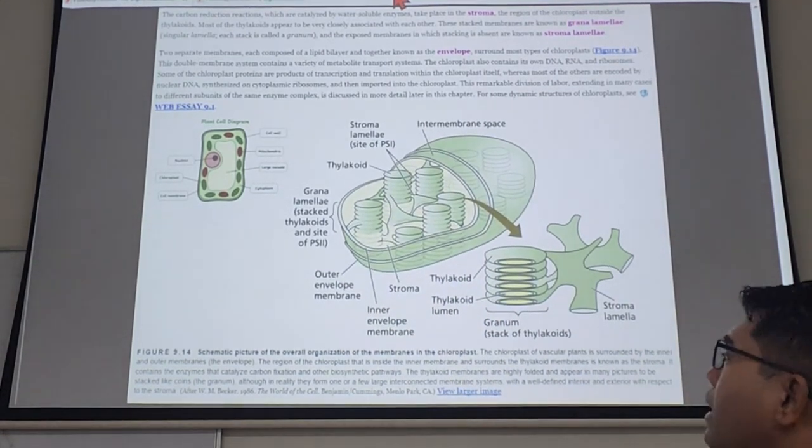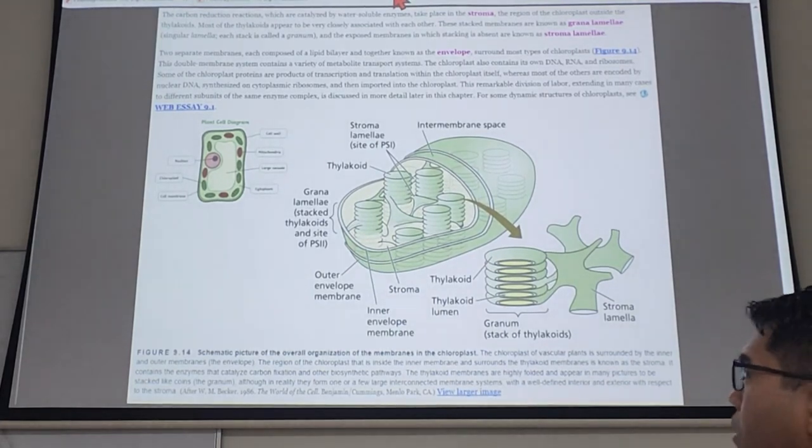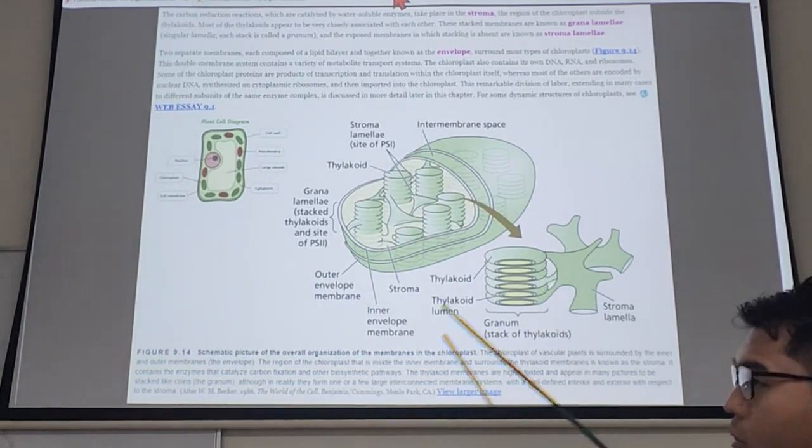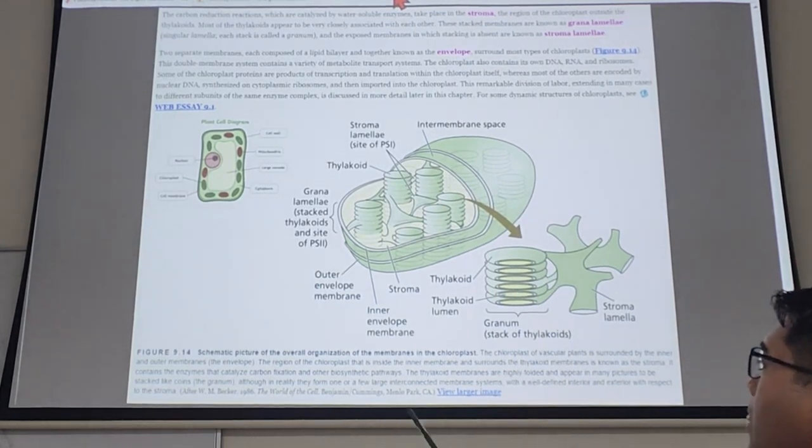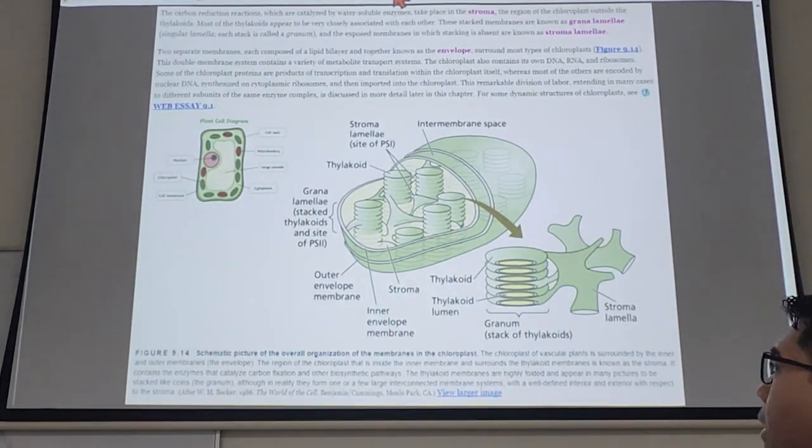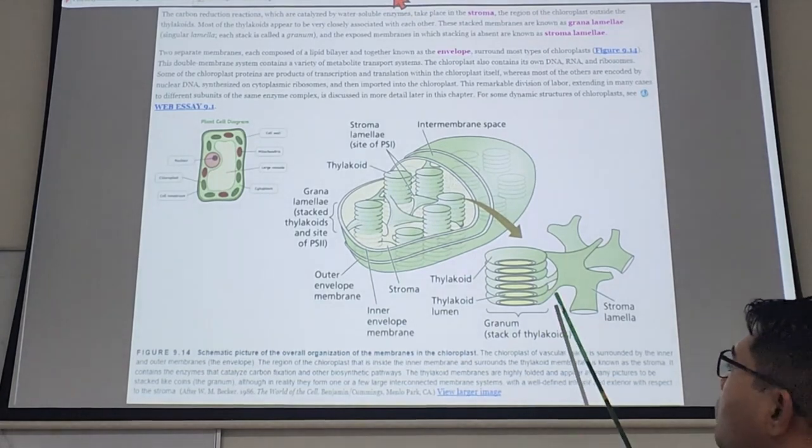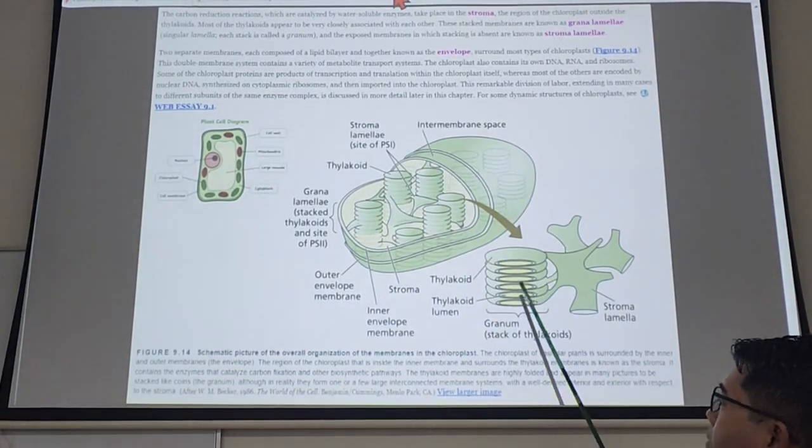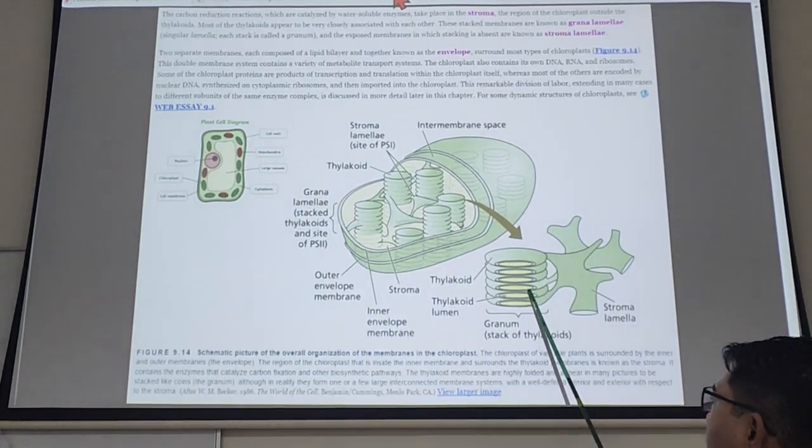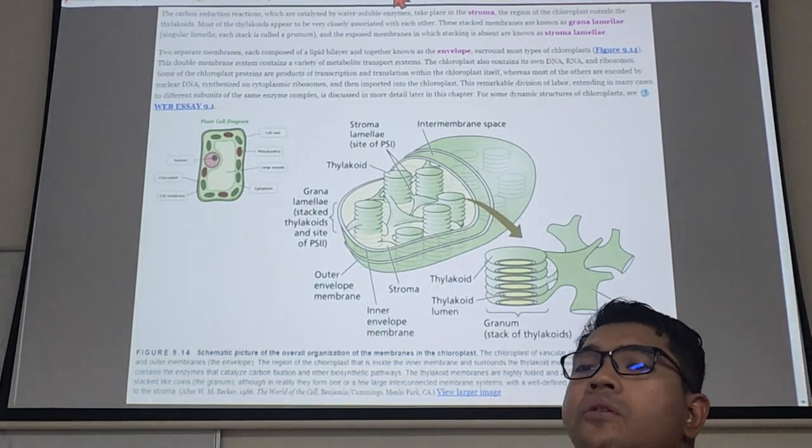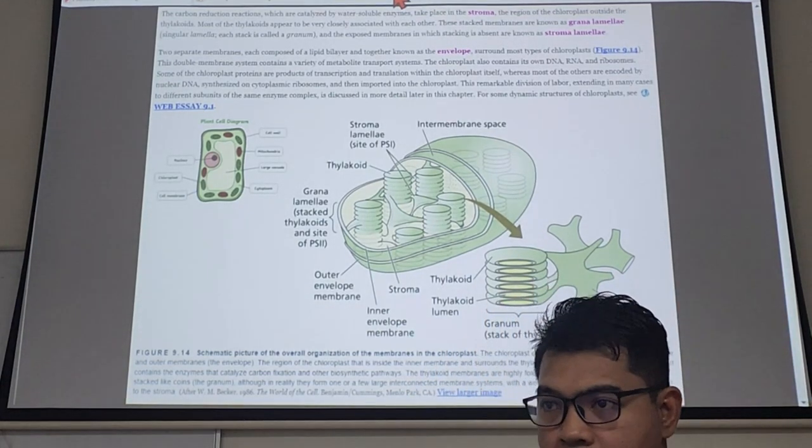I know that maybe you have learned this before, the concept of grana, granum, that kind of thing. But this time we're going to correct your understanding with the correct labeling. So a stack of this thing is called granum. One pancake, two pancake, three, four, five, six - the whole thing is called granum.